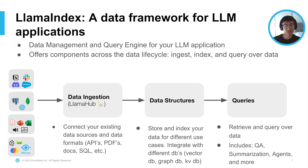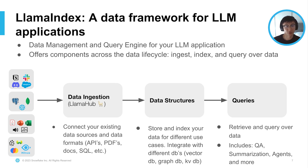Llama Index is a data framework for building LLM apps. It's a data management and query engine for your LLM application to help you primarily do retrieval augmented generation with a little bit of fine-tuning. We offer components across the data lifecycle to allow you to ingest, index, and query over your external data corpus. You start off with source data from stuff like Slack, Notion, Discord, databases, and files like PDFs, PowerPoint, and CSV files.